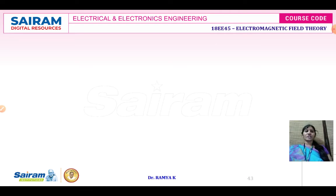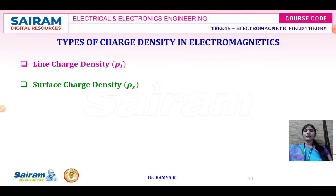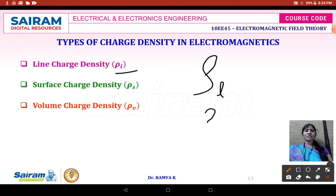The types of charge density in electromagnetics are: first, line charge density; second, surface charge density; third, volume charge density. Line charge density is represented with the letter rho suffix L. Surface charge density is represented with the letter rho suffix S, and volume charge density is represented with the letter rho suffix V.